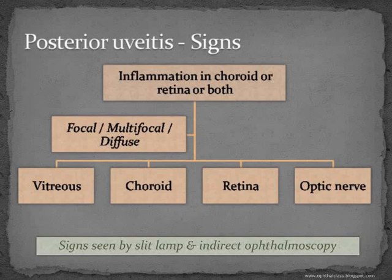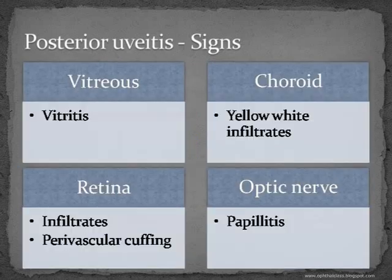These signs are seen both by slit lamp and indirect ophthalmoscopy. Slit lamp examination will take us as far as the anterior vitreous, but the posterior vitreous and the entire retina and choroid need to be seen by indirect ophthalmoscope — either with the instrument itself, or with a +78 or +90 diopter lens with the slit lamp. In posterior uveitis the vitreous will have opacification, exudation of membranes, cells, and clumps in the vitreous.